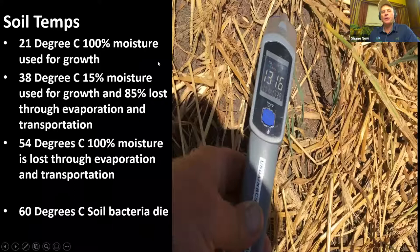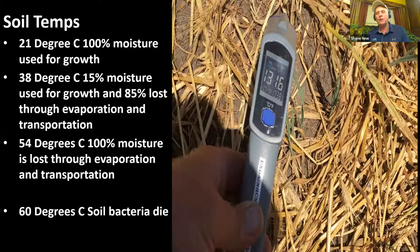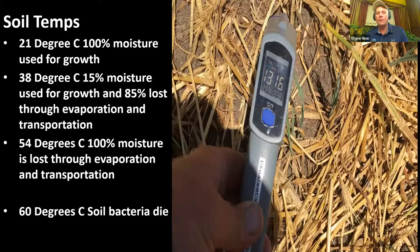Another reason we want soil surfaces covered is to keep soil temperatures where we can optimize plant growth. At about 21°C (70°F), 100% of our moisture is used for plant growth. At 38°C, only 15% goes to growth and 85% is lost through evaporation and transpiration. At 54°C, 100% of moisture is lost. At 60°C, we're killing our microbiology — the same biology that builds our micro and macro aggregates. For those in brittle environments with limited rainfall, it's critical to keep that moisture as long as possible, not only for plant growth but to keep that microbiology functioning.